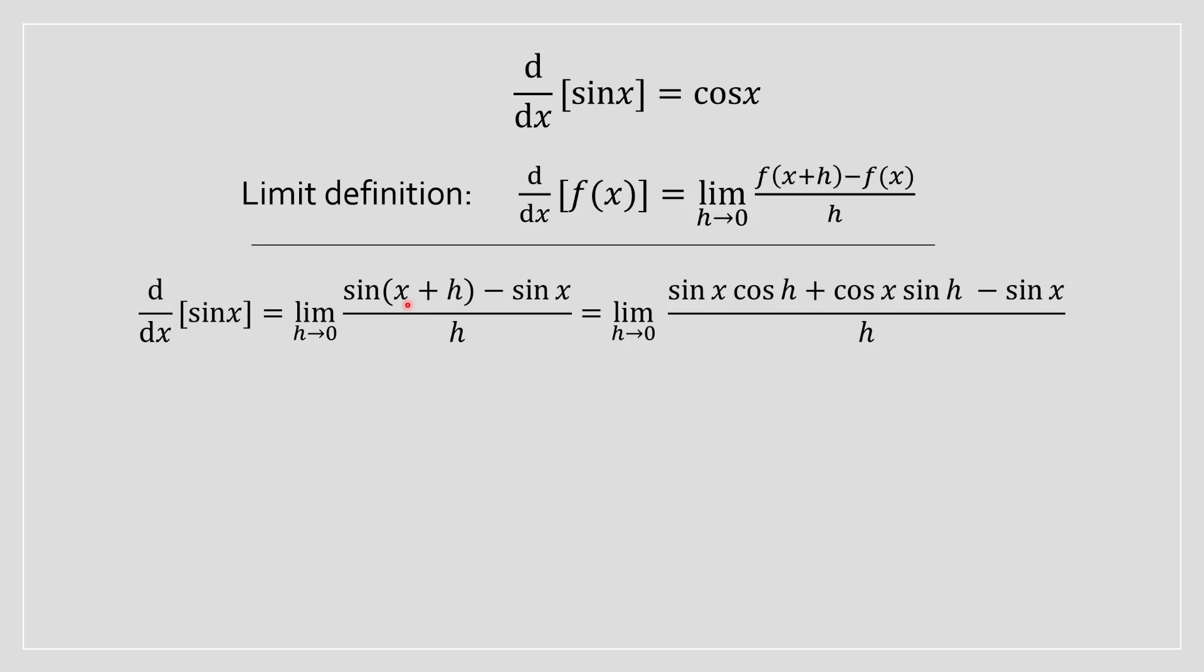So you can rewrite sin(x + h) as the following over here and we do this because we need to simplify and to do so we have to do this trig identity. Notice over here there's a sine of x and over here there's a sine of x. Therefore we can factor that out because there's a common term.